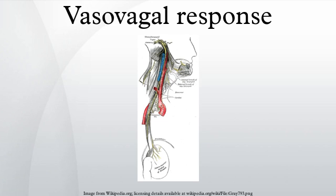Vasovagal syncope more commonly affects young adults. There are different syncope syndromes which all fall under the umbrella of vasovagal syncope. The common element among these conditions is the central mechanism leading to loss of consciousness; the differences among them are in the factors that trigger this mechanism.